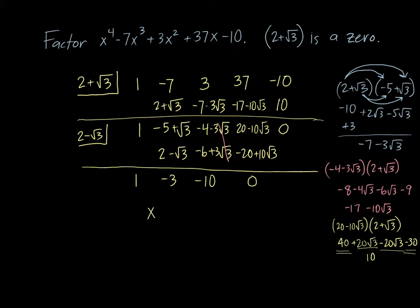So the remaining quadratic is x squared minus 3x minus 10. Technically x minus 2 plus the square root of 3 is a factor, and x minus 2 minus the square root of 3 is a factor. But typically I don't want to write them like that because that's not really factored if it's got that square root of 3 in it. We need to know the quadratic that comes from multiplying x minus 2 plus the square root of 3 and x minus 2 minus the square root of 3.